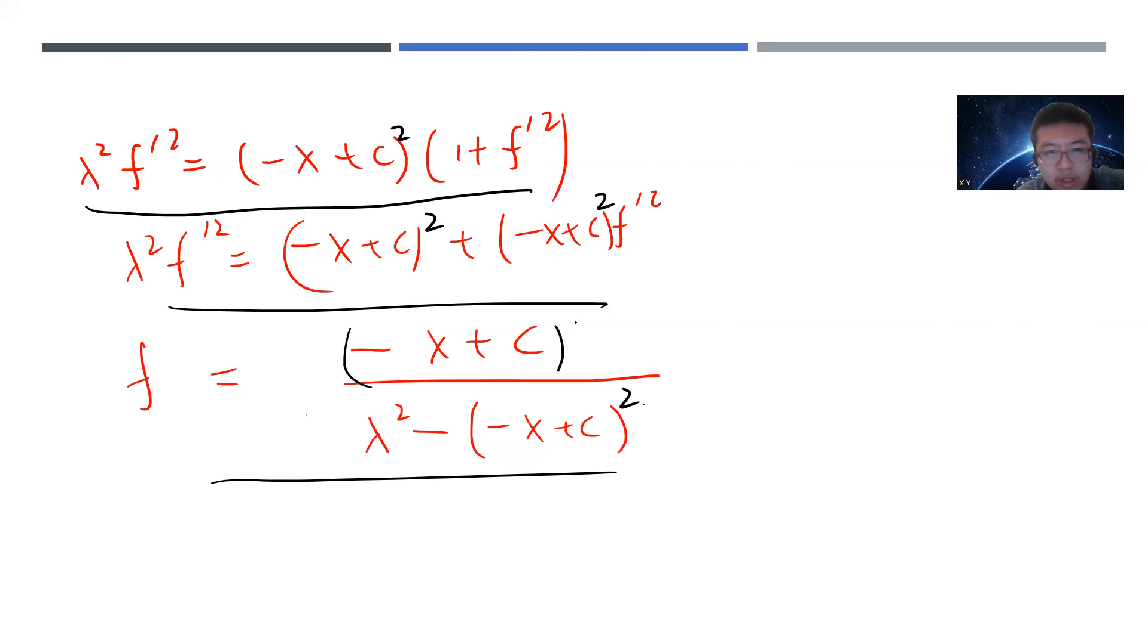So this should be square. And then this is F prime square. Now we take a square root again. So we can F prime. Let's suppose this is plus or minus. It's fine. Let's say, plus or minus C minus X square root of lambda square minus C minus X square.